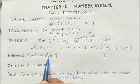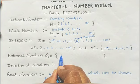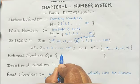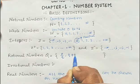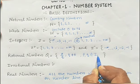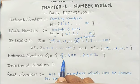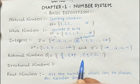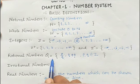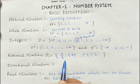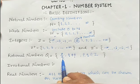Now the collection of rational numbers — we denote rational numbers as Q, Q for quotient. The definition of rational numbers is: all numbers which can be represented in the form of p by q, where q is not equal to 0 and p and q are integers. All numbers which can be represented in the form of p by q where q should not be equal to zero and p and q should be integers — this collection is known as rational numbers.